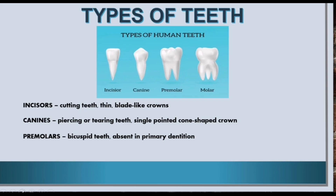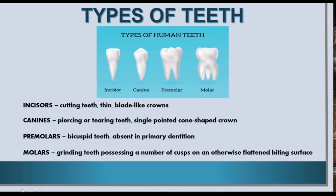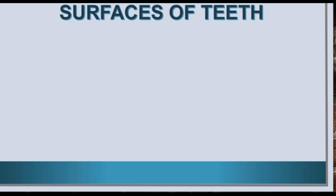Canines have a single pointed cone-shaped crown. Third is premolars. Premolars are bicuspid teeth — that is, they have two cusps and they are absent in primary dentition. Fourth is molars. Molars are grinding teeth possessing a number of cusps on an otherwise flattened biting surface.